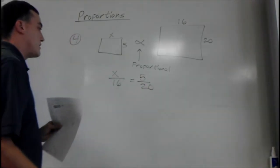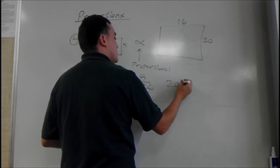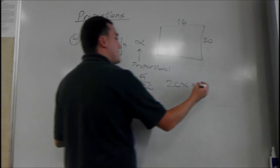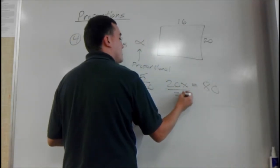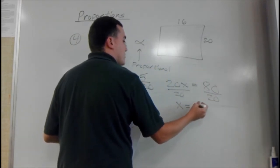And then you just solve it like we just did. We'd have x times 20 is 20x equals 5 times 16, which is 80. And then you just solve it. Divide by 20 on both sides. So we get x equals 4.